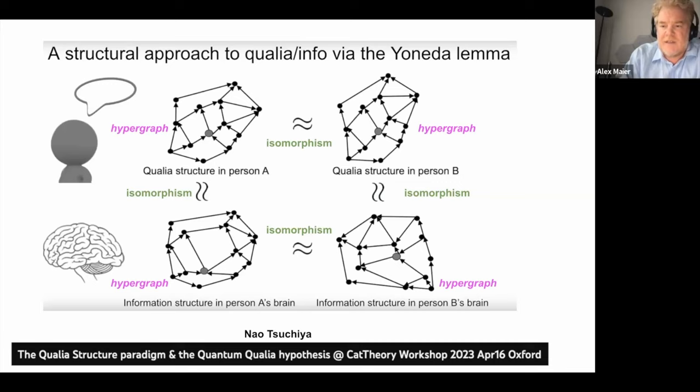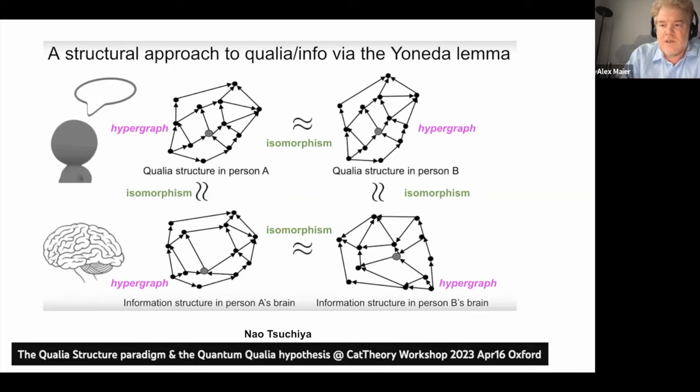I've denoted the hypergraphs here in purple, and I will explain a little bit more what hypergraphs are in a moment. But what I am interested in is that once we reach this point in consciousness science where we can describe the qualia structure of people and connect that to the information structure from the brain activity, we run into a question: how do we know they are isomorphic? That is the topic of my talk today.